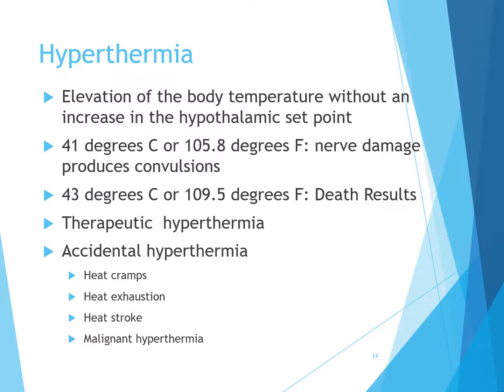Therapeutic hyperthermia is a form of local, regional, or whole-body hyperthermia used to destroy pathological microorganisms or tumor cells by facilitating the host's natural immune process or tumor blood flow. Accidental hyperthermia includes heat cramps — severe spasmodic cramps in the abdomen and extremities following prolonged sweating associated with sodium loss — and heat exhaustion, which results from prolonged high core or environmental temperatures causing profound vasodilation, dehydration, decreased plasma volume, hypotension, decreased cardiac output, and tachycardia.